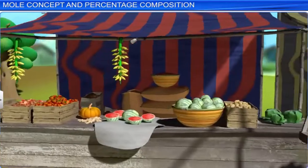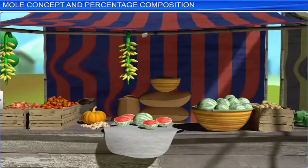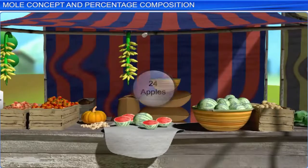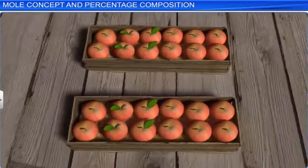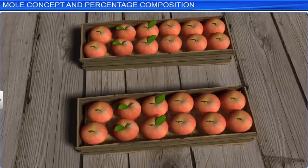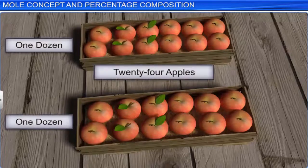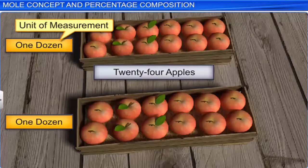Before we begin, let's step into a store to buy some apples. Let's say we need 24 apples. When we collect them, we get them in 2 boxes, with 1 dozen or 12 apples in each box. Here, dozen is a unit of measurement that helps us simplify and state a large quantity, like 12.